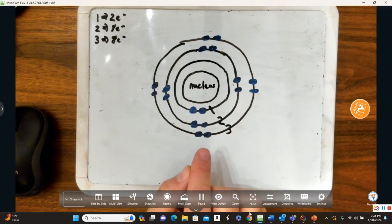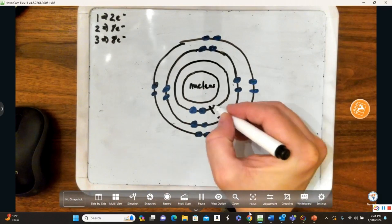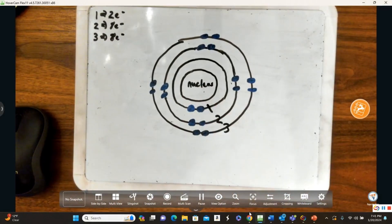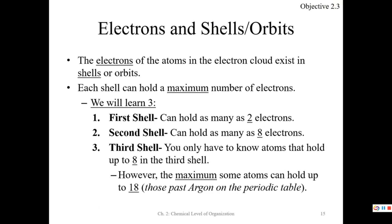Shell number one, once it's full, you have to go to shell two. Going up to argon covers CHON and gets about 96% of the elements in your body. Let's practice this by drawing electron configurations.